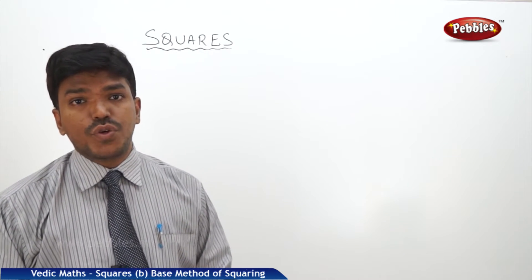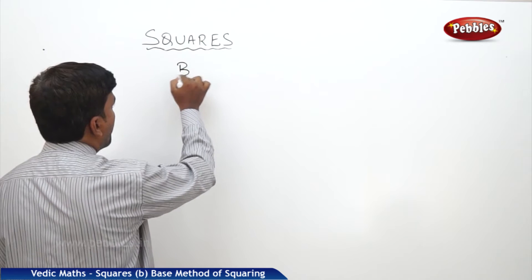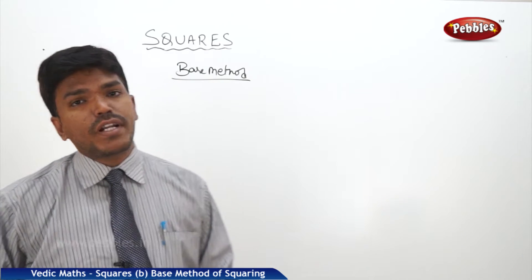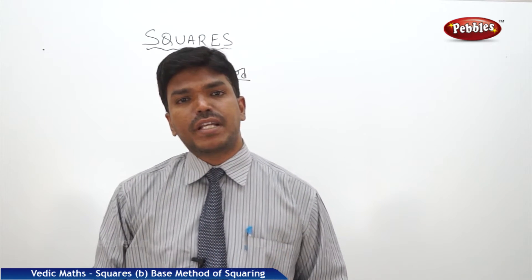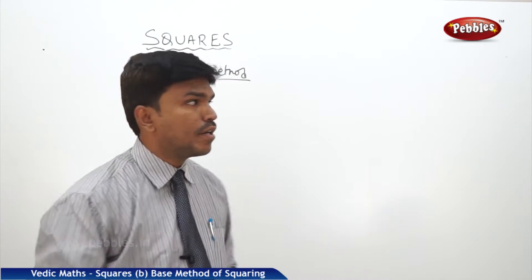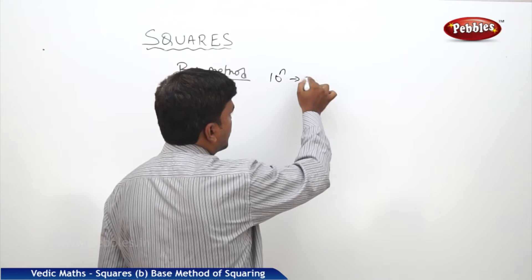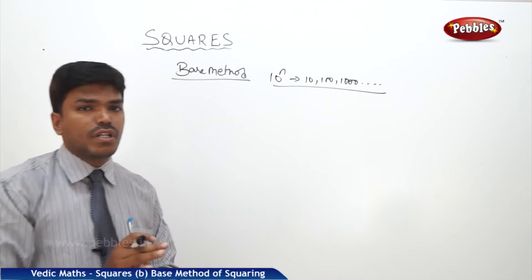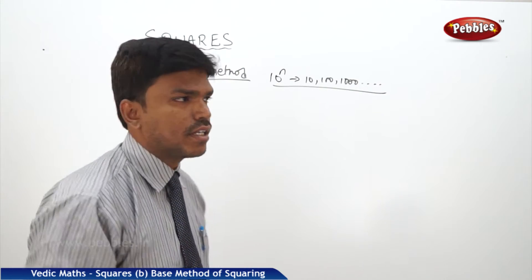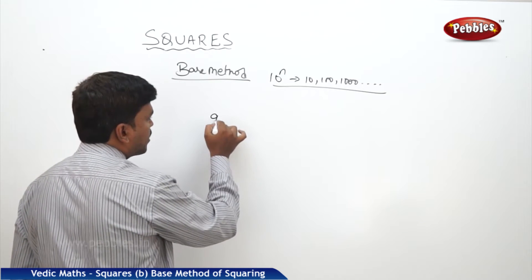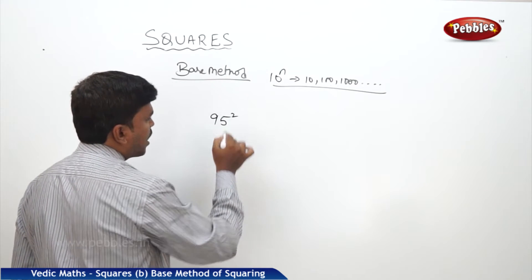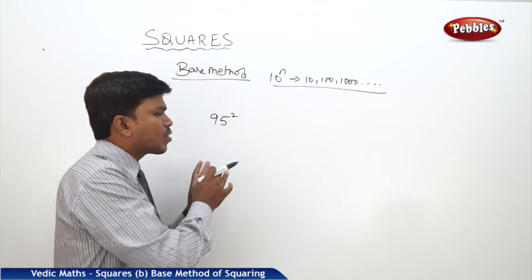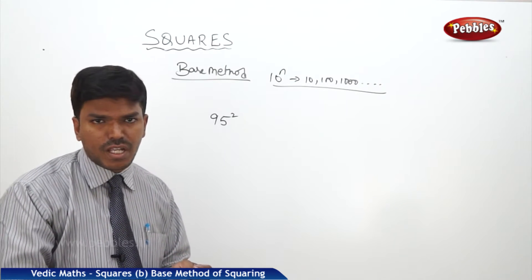Now, squares using the base method. How to find out the squares of numbers which are nearer to the base? In general, the base numbers are in the format 10^n, that is 10, 100, 1000, and so on. For example, I need 95 squared. If I compare 95 with the base 100, 95 is closer to 100, so we take the base as 100.